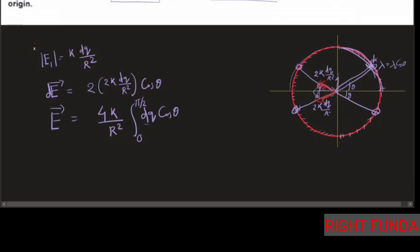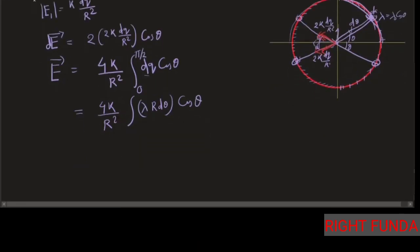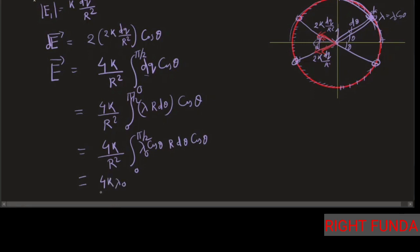Now, what is dq? The charge element is dq = λ·dl = λ·r·dθ. Substituting λ = λ₀cosθ, the integral for the net electric field becomes E = 4k/r²·∫₀^{π/2} λ₀·cosθ·r·dθ·cosθ, which simplifies to E = 4kλ₀/r·∫₀^{π/2} cos²θ·dθ, after cancelling one factor of r.